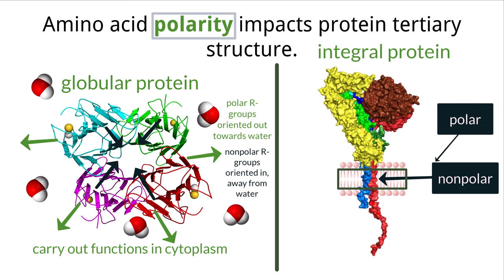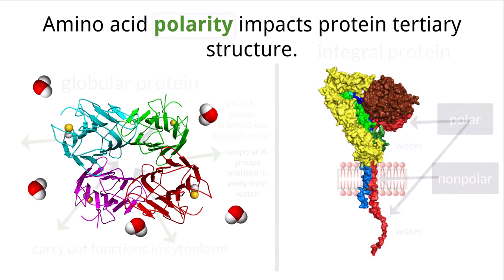We would then find polar amino acids that make up the other ends of the protein, as water is found both in the cytoplasm inside of the cell and outside of the cell in the exterior space.